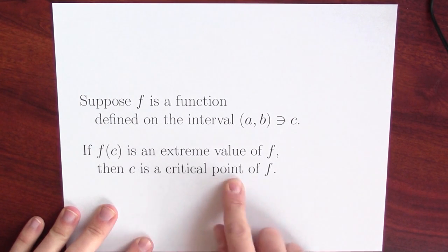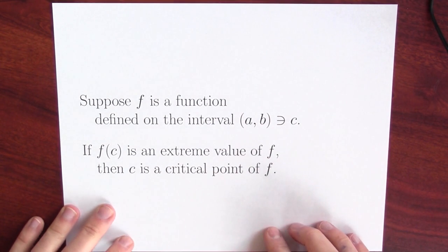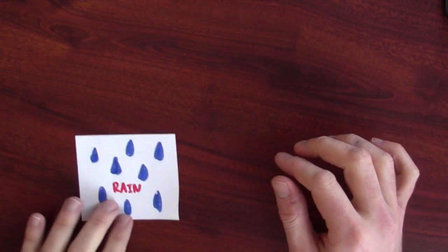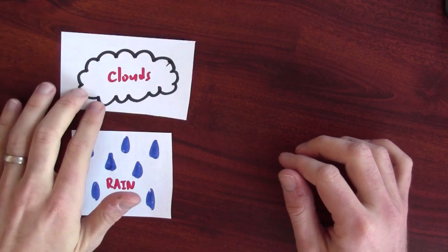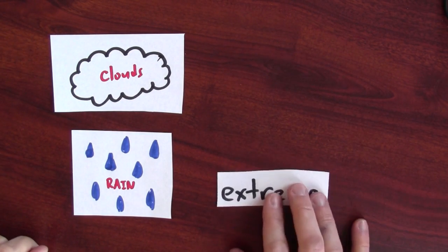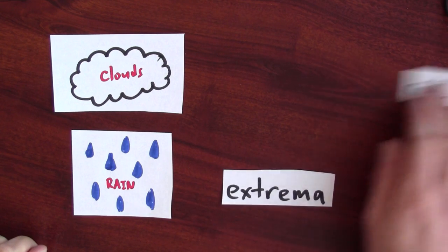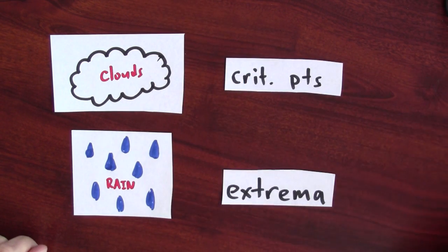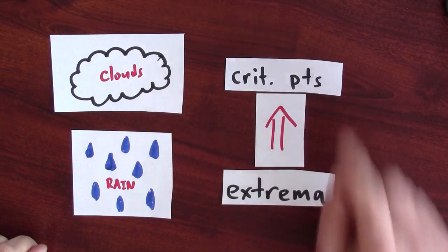Giving a name to this phenomenon gives us a really nice way of stating Fermat's theorem. The upshot is that if you want to find extreme values for a function, you don't have to look everywhere. You only have to look at the critical points where the derivative either doesn't exist or the derivative vanishes. And you should probably also worry about the endpoints. In other words, if you're trying to find rain, you should just be looking for clouds — you just have to check the cloudy days to see if it's raining. In the same way, if you're looking for extreme values, you only need to look for the critical points, because an extreme value gives you a critical point.